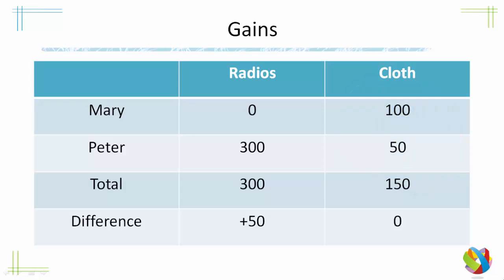And so that is the principle of comparative advantage, showing that even countries that have an absolute advantage in producing all things can gain by specializing in producing the things which they are relatively better at than other nations. This is the basis of most modern trade theories, and the validity of this theory does seem to show up in empirical data. There are some modifications that we need to make, but generally it is a valid idea.